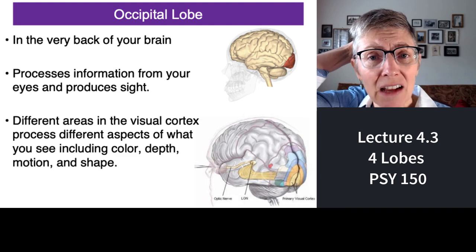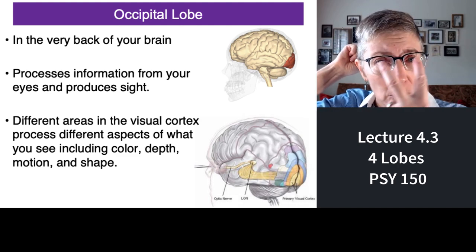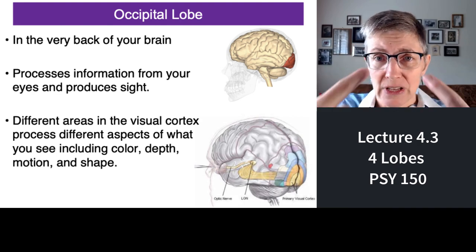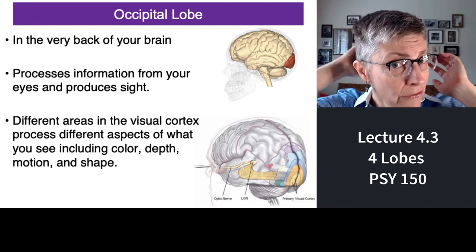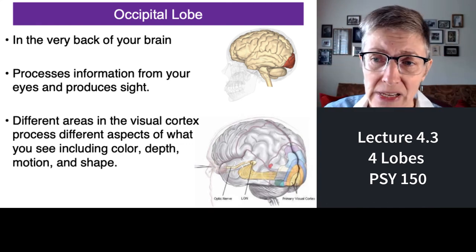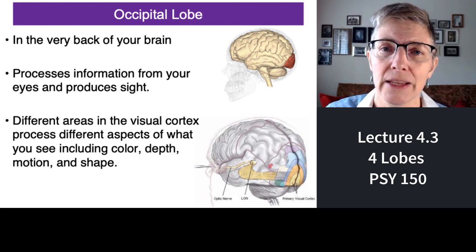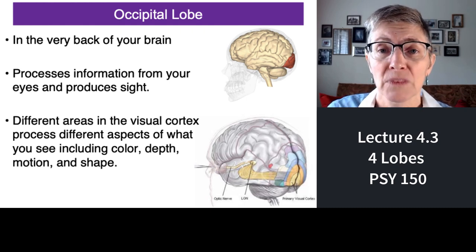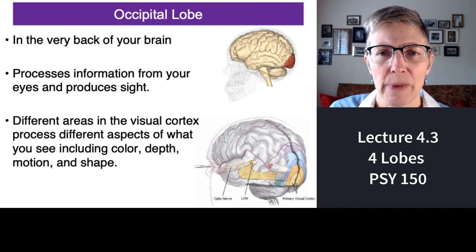Lastly, the occipital lobe, all the way in the back of your head, processes visual information. Light information that goes into your eyes travels all the way to the far back of your brain to be analyzed. Different areas in your visual cortex specialize in things like color, movement, and other aspects of vision. And that's all about the lobes for now — come right back and we'll talk some more about the brain.